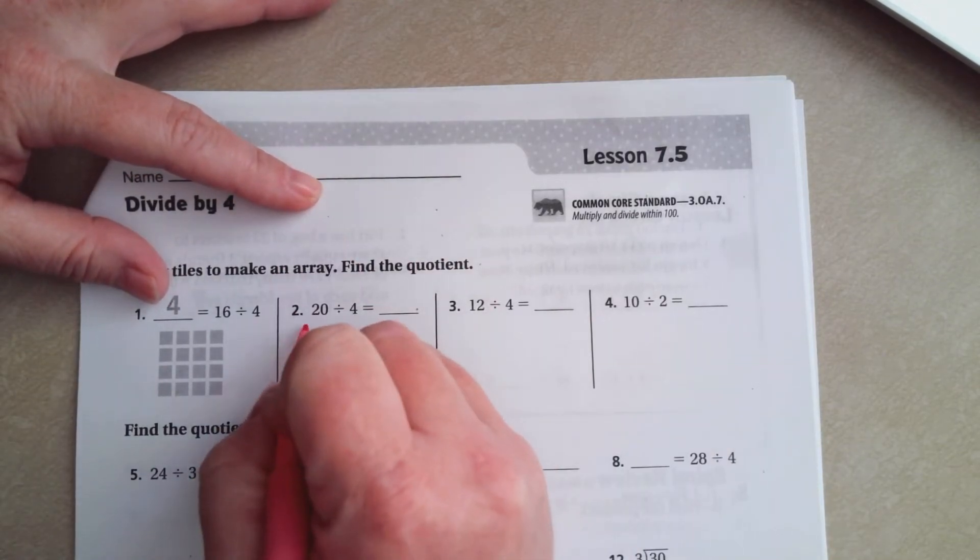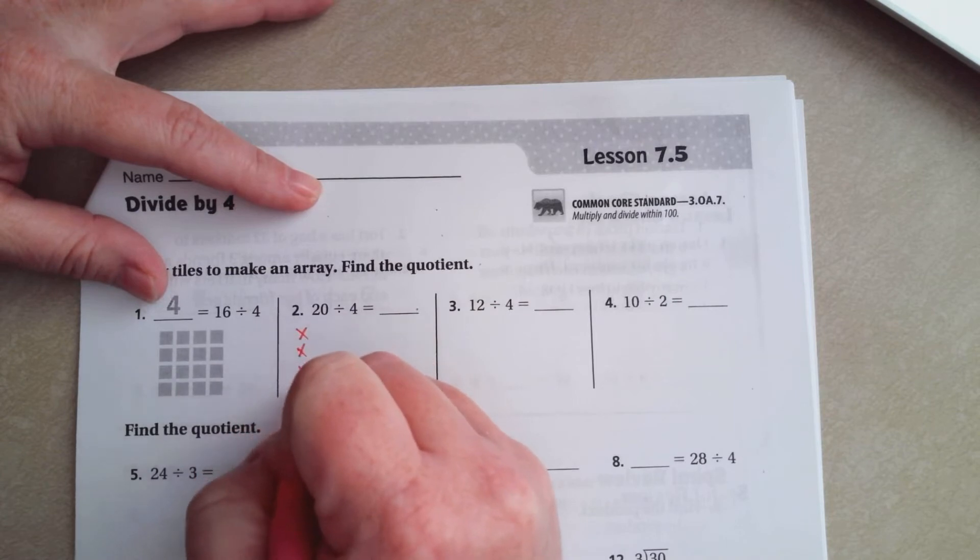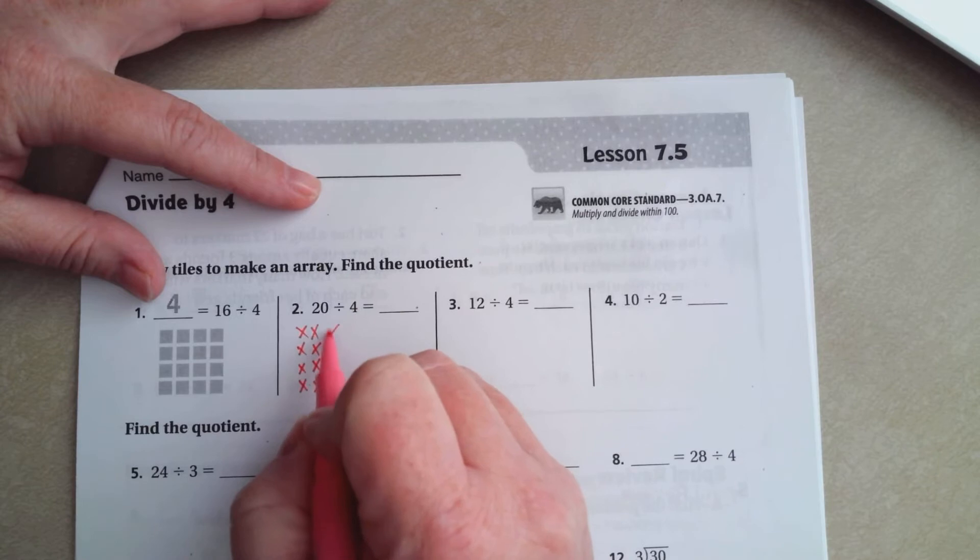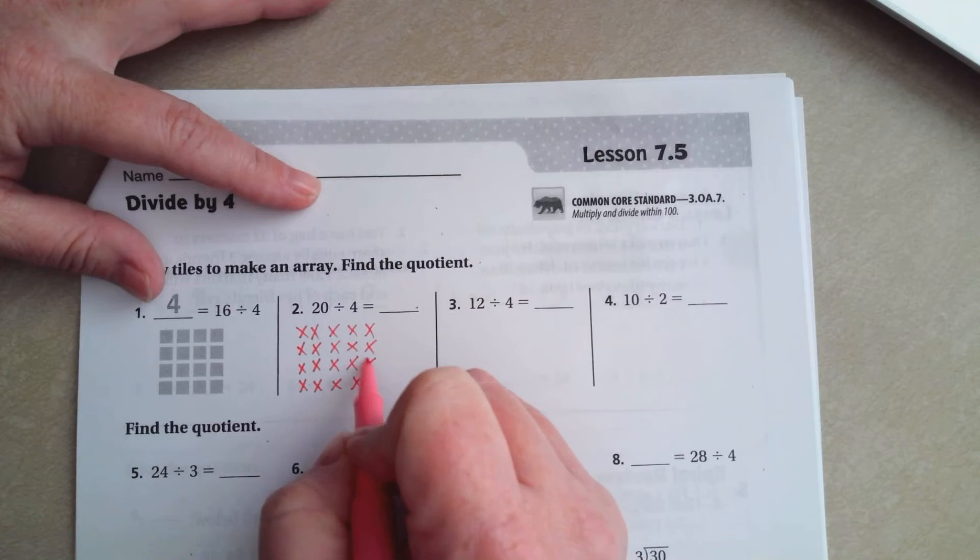Until I get to 20, so 1, 2, 3, 4, 5, 6, 7, 8, 9, 10, 11, 12, 13, 14, 15, 16, 17, 18, 19, 20.